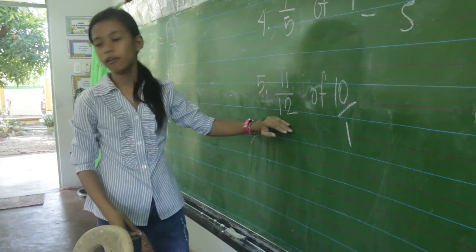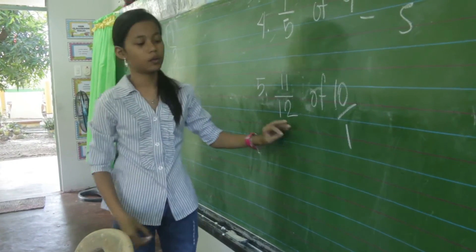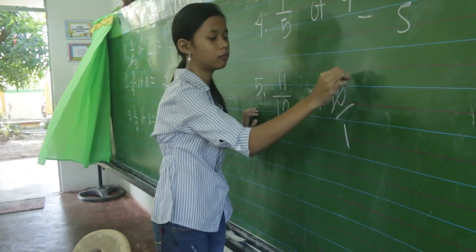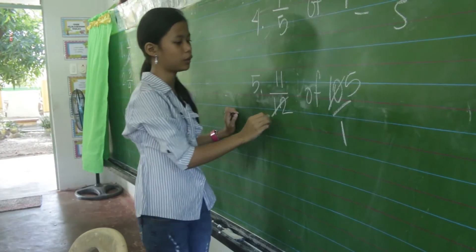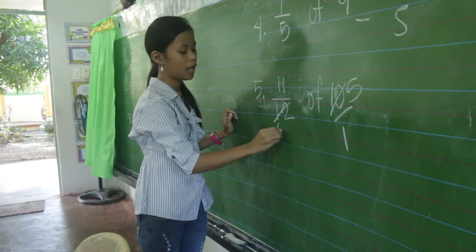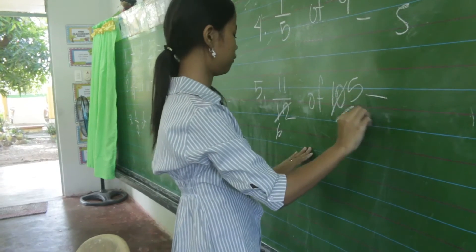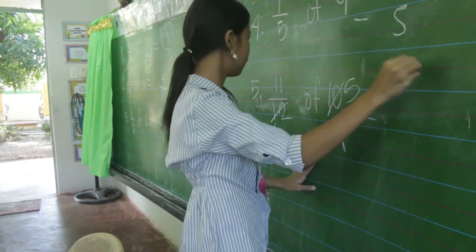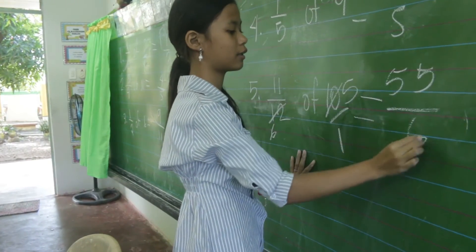Ten and twelve, their common factor is two. Ten divided two? Five. Twelve divided two? Six. Eleven times five? Fifty-five over six.